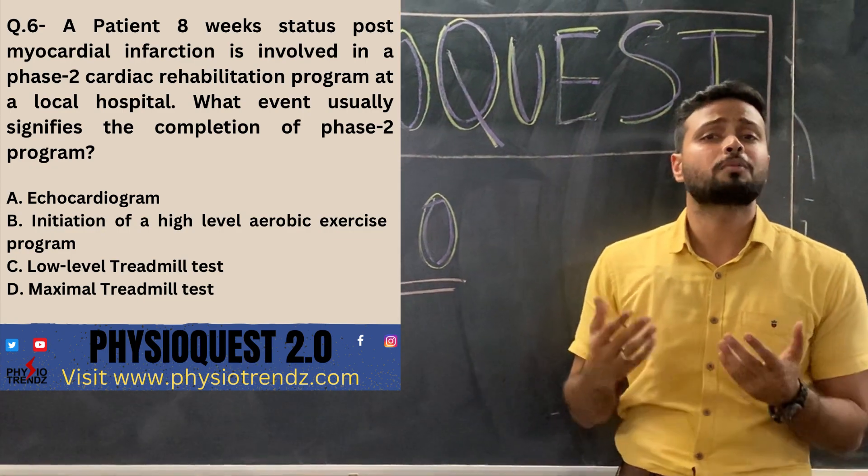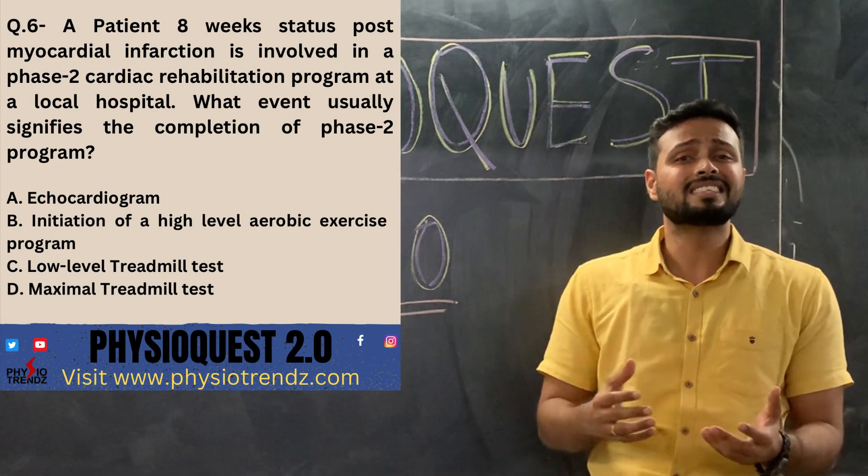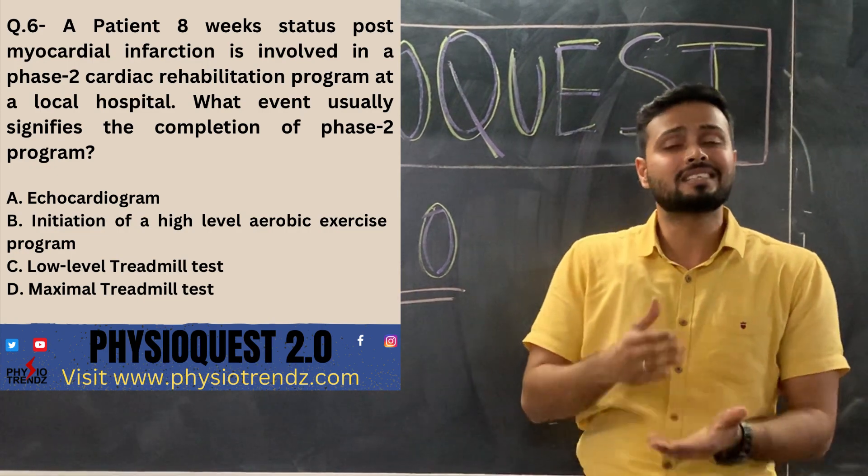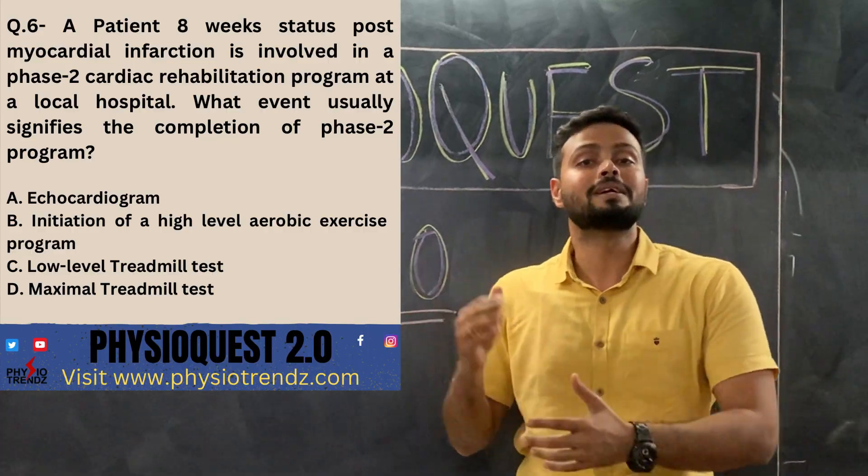The options are: Option A, ecocardiogram; Option B, high intensity or endurance level aerobic activities; Option C, minimal treadmill test; and Option D, maximal treadmill test.